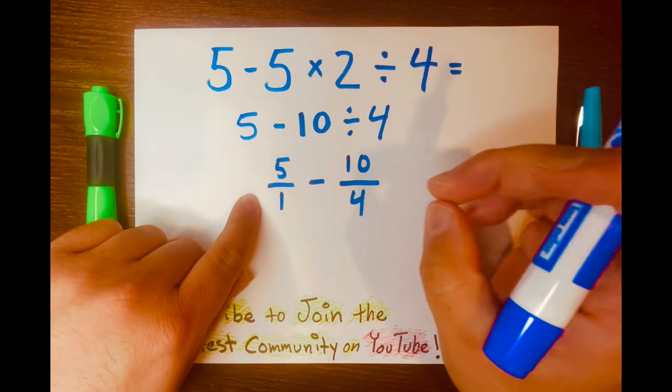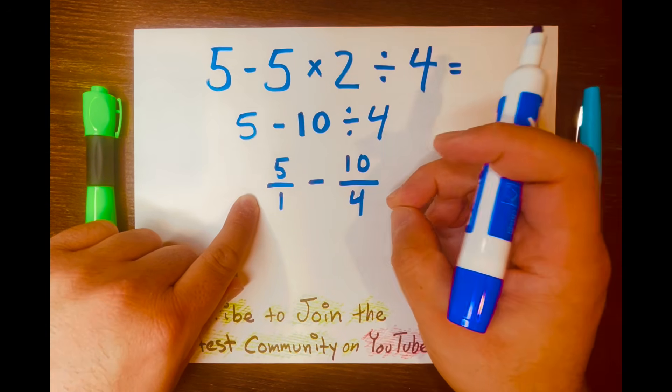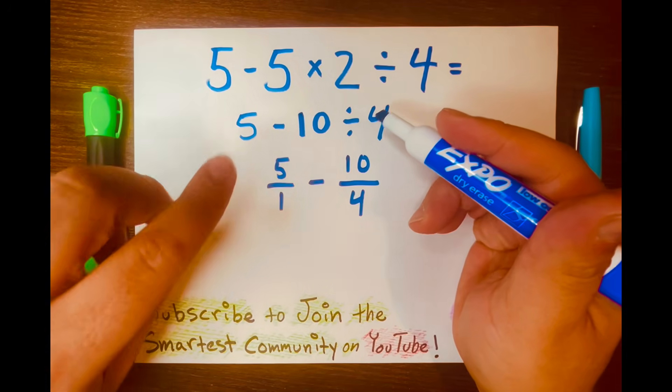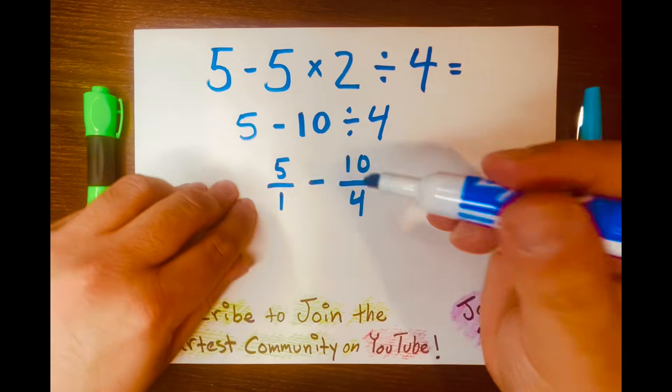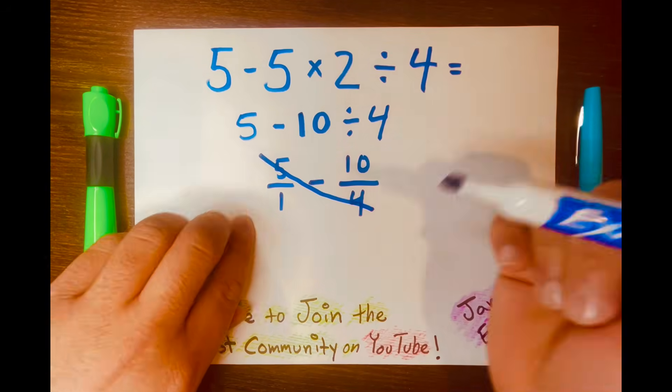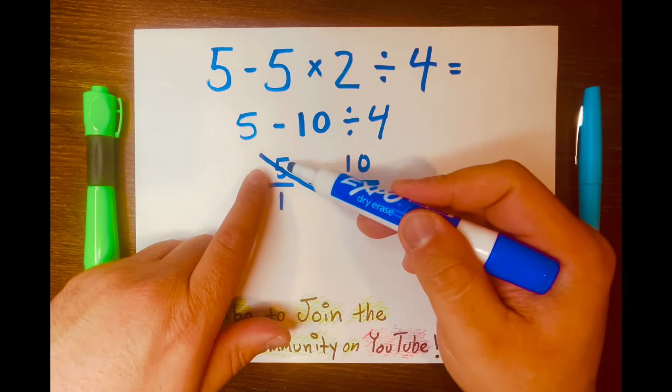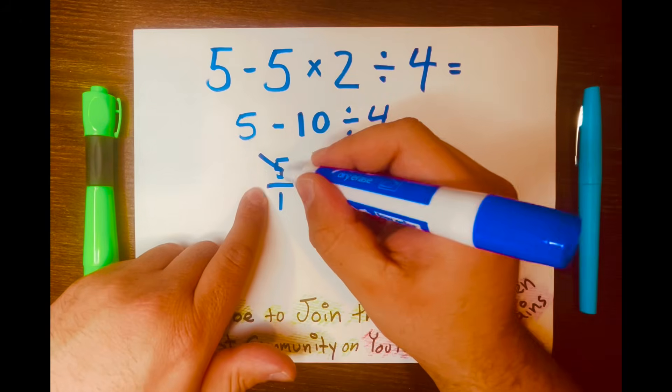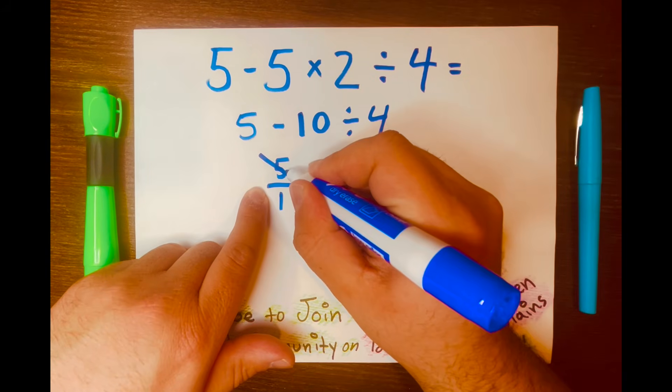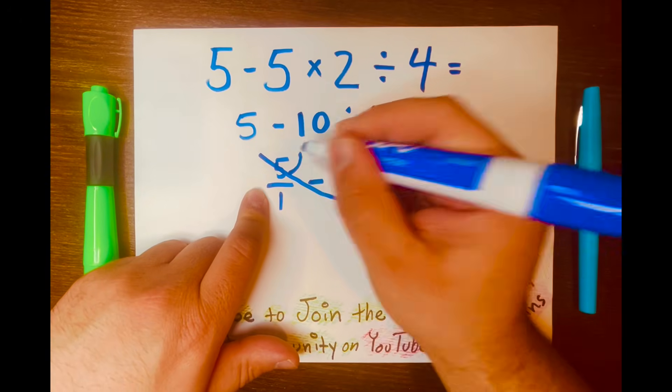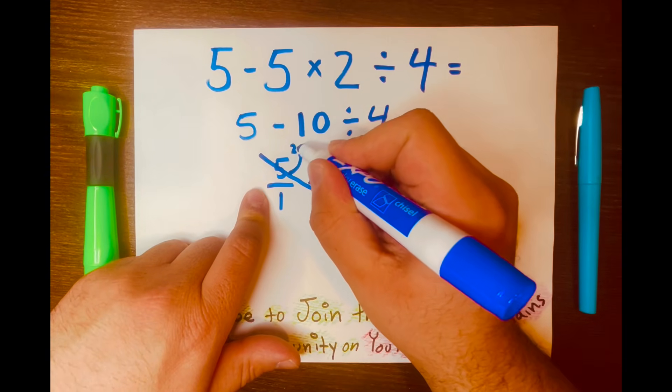So we're going to use the butterfly method. And the butterfly method, we need to draw two wings, a body, and some antennas. So I'm going to draw the first wing like this. And we multiply 5 times 4 or 4 times 5, and that equals 20. And we need to draw the antenna and write the 20 above like that.